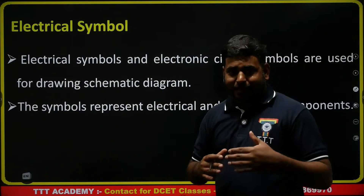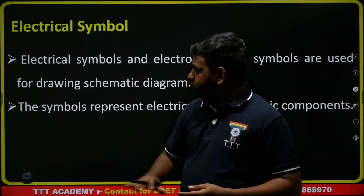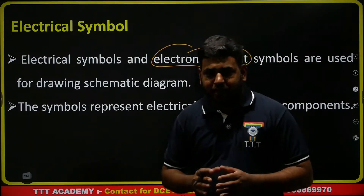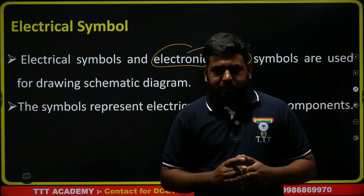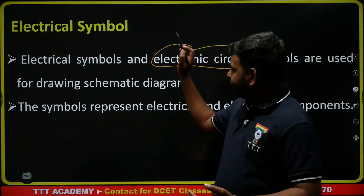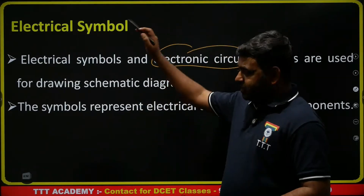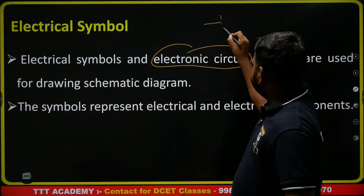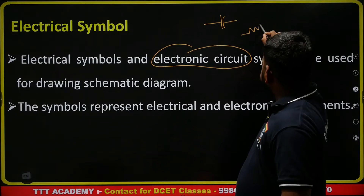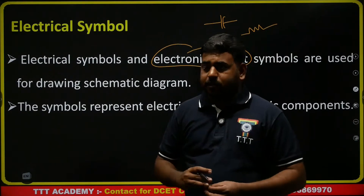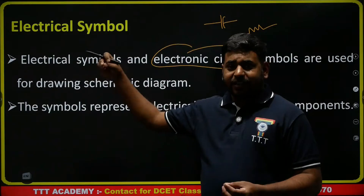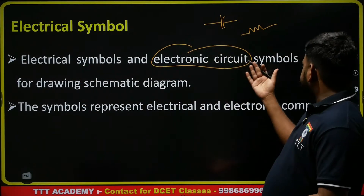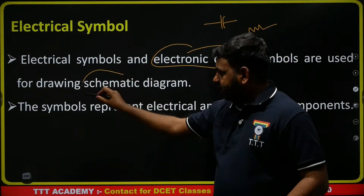Electrical symbol — what is meant by electrical symbol? The electric symbols and electronic circuits. One electronic circuit, for example one device — one resistor, one resistor is connected. Instead of that, one device, one symbol. For example, capacitors — one symbol; resistors — one symbol; inductor — one symbol. These are different devices, each with one symbol. The electrical symbols and electronic circuit symbols are used for drawing schematic diagrams.